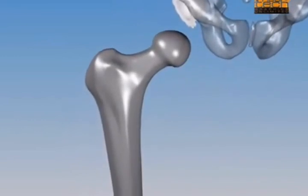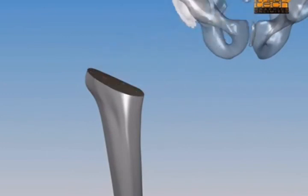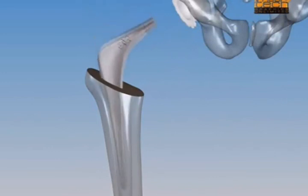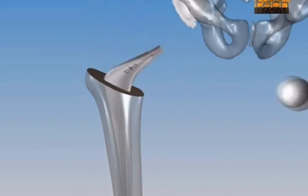The next step in the operation is to replace the natural, worn-out ball with an artificial one. The femoral head is removed by cutting through, and then the upper end of the thigh bone is shaped to conform to the stem of the artificial ball.